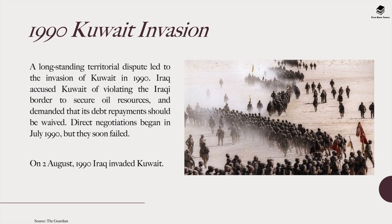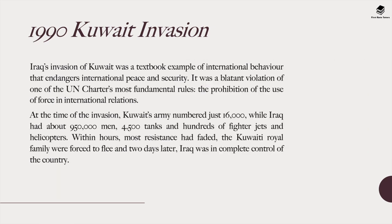A long-standing territorial dispute led to the invasion of Kuwait in 1990, also known as the Gulf War. Iraq accused Kuwait of violating the Iraqi border to secure oil resources and demanded that its debt relief payments be waived. Direct negotiations began in 1990 but soon failed. On 2nd August 1990, Iraq invaded Kuwait — a textbook violation of international peace and security and of the UN Charter's prohibition on the use of force. At the time of the invasion, Kuwait's army numbered just 16,000 men, while Iraq had about 950,000 men, 4,500 tanks, and hundreds of fighter jets and helicopters. Within hours most resistance had faded, and two days later Iraq was in complete control of Kuwait.